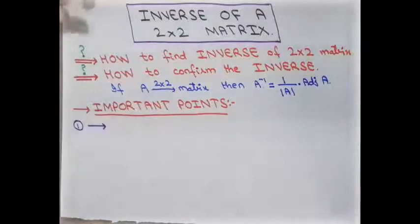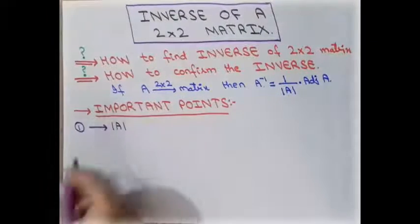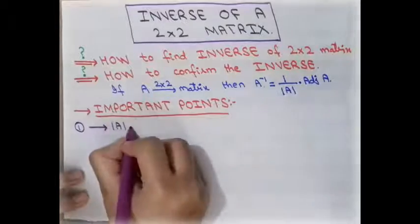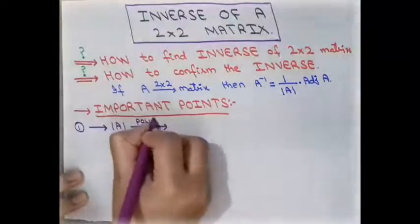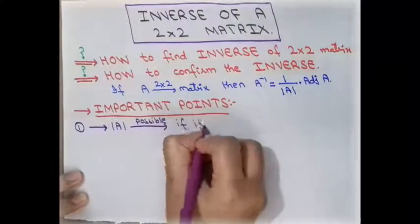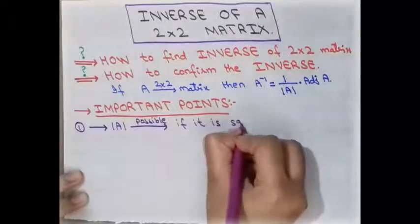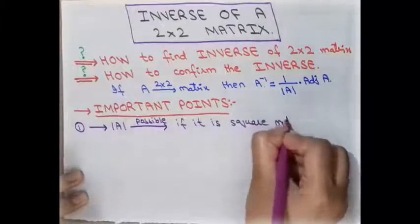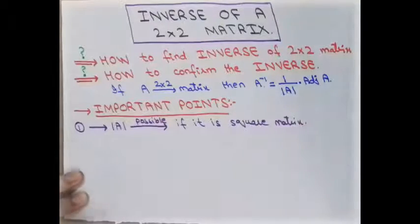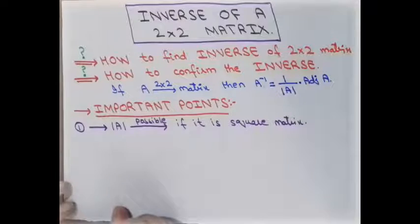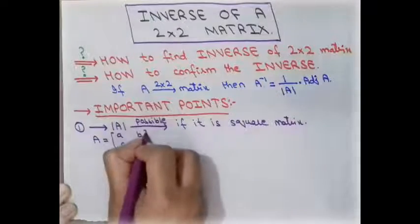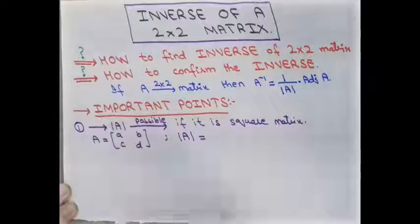To find the inverse, first of all we have to calculate the determinant of any matrix. We know that the determinant of any matrix is possible if it is a square matrix. We already discussed how to take a determinant and what the conditions are in a previous video — the link is in the description box. The determinant equals the product of diagonal elements: ad minus bc.